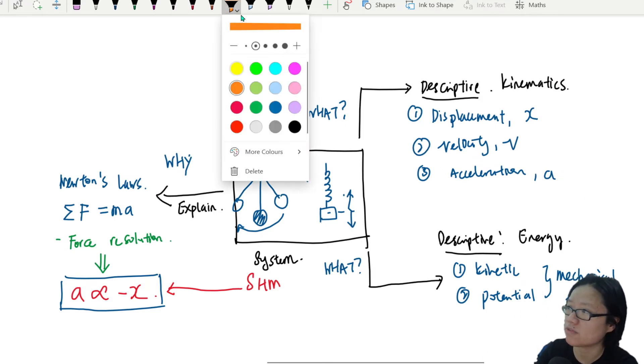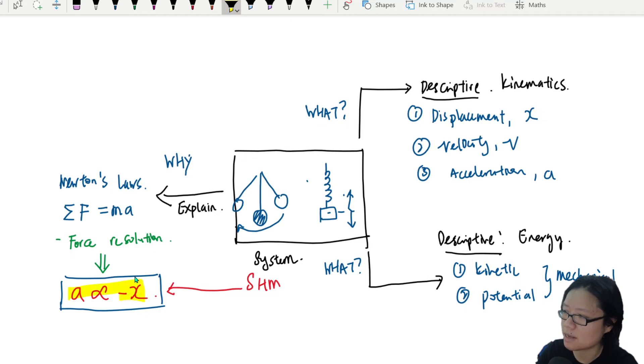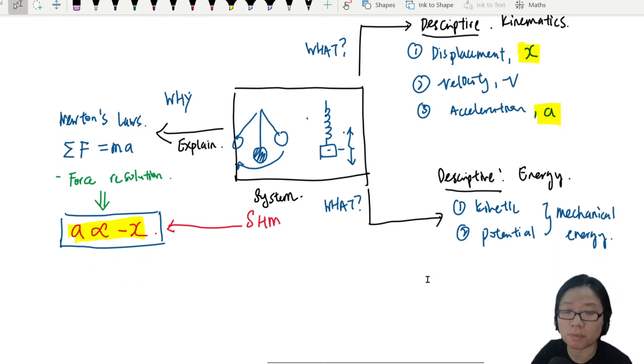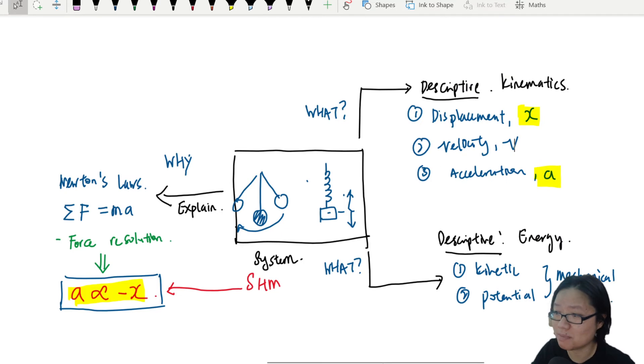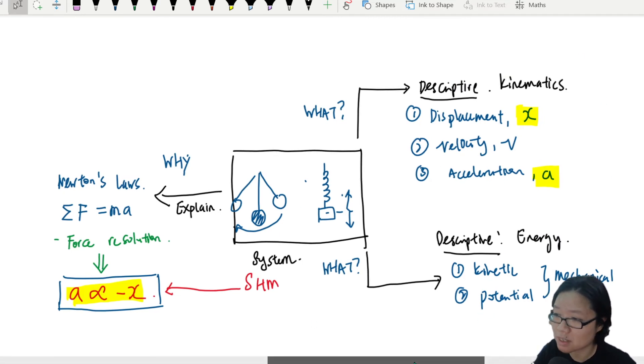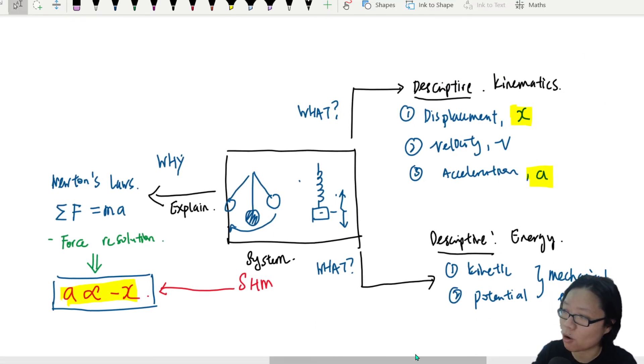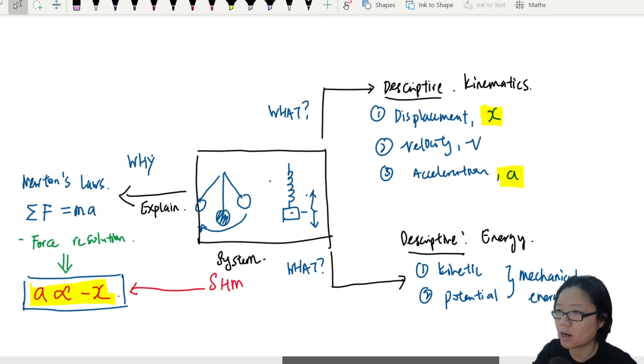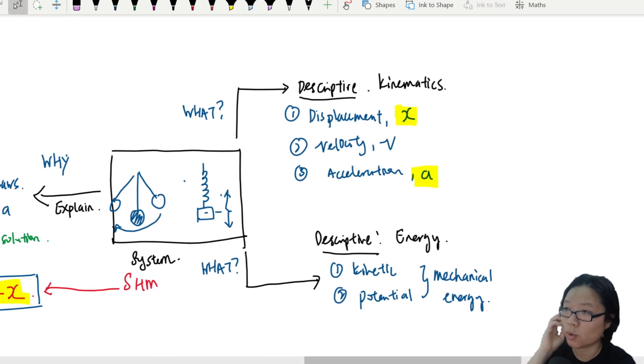So we're going to focus on SHM systems because we have done the force resolution. And if it's simple harmonic motion, we know that the acceleration of the particle is proportional to negative x. So once you can cash in or once you know this about your motion, don't care whether it's a pendulum or whether it's a block, as long as it's proportional to negative x, this thing is in simple harmonic motion. And it's a bit like a pass or an unlock.